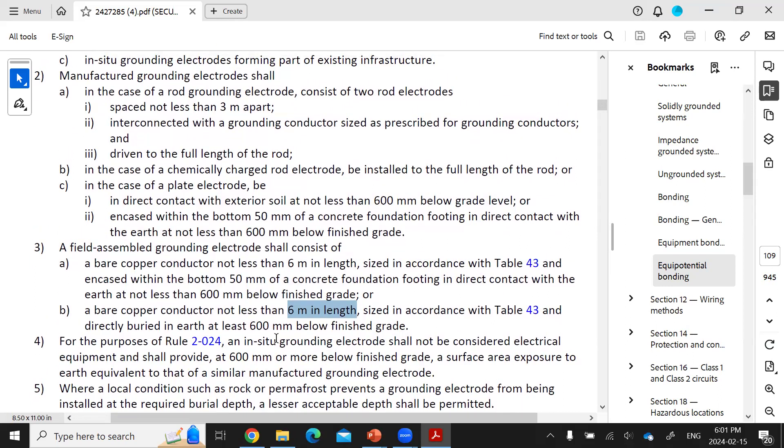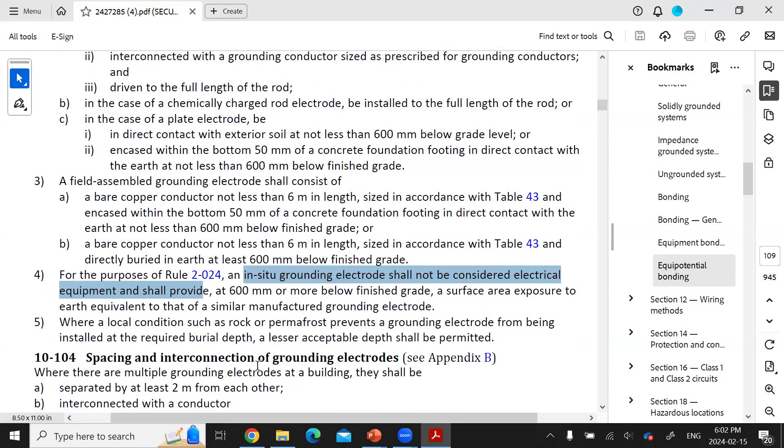Subsection 4 says when a bare copper conductor is buried into an in-situ electrode that is not considered electrical equipment, for example a pipe or a steel line, then the bare copper conductor must be sized in accordance with Table 43 again, and it can be no less than 6 meters long and has to be no less than 600 millimeters below grade again.